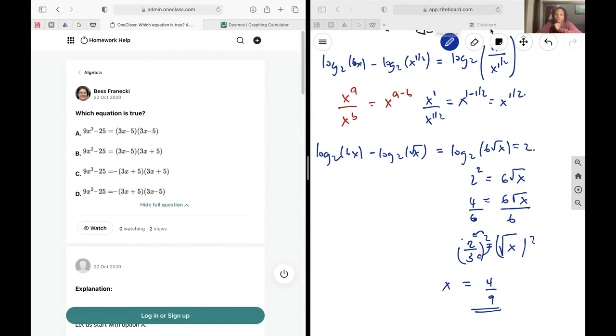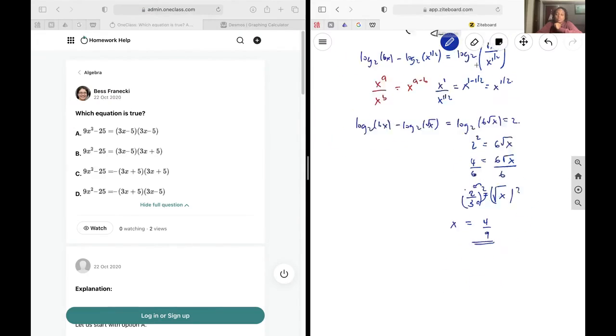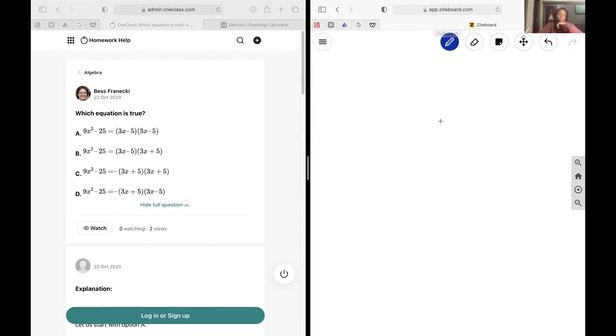Okay, next up I want to figure out which equation is true. I'm going to be using difference of squares again, and so we need to recall that a squared minus b squared is a plus b multiplied by a minus b.